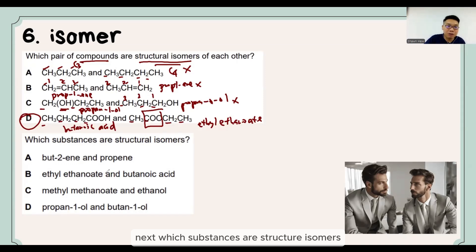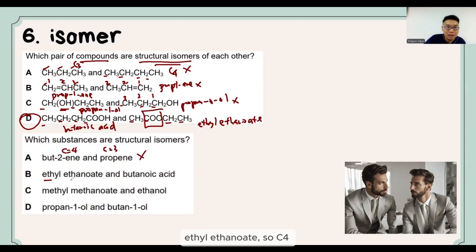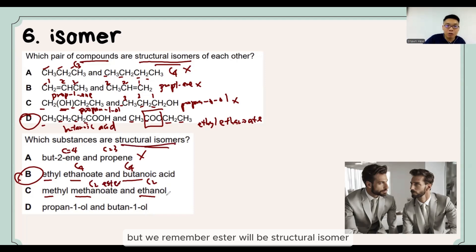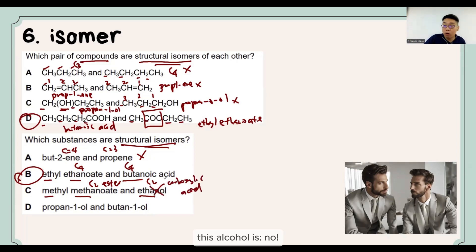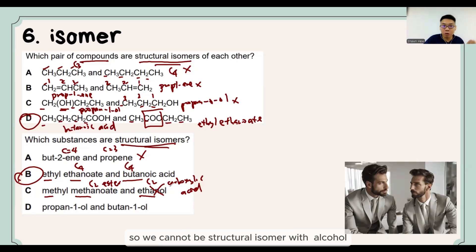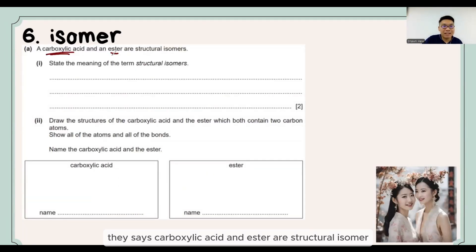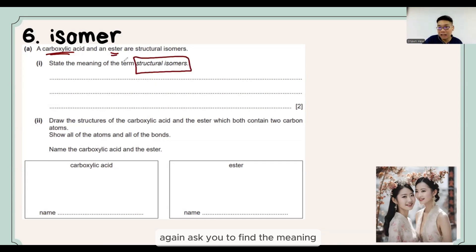Next question: which substances are structural isomers? For option A — butene vs propene — one is C4, the other is C3, so definitely not structural isomers. The question then asks about a pair involving an ester and alcohol. For option D — propan-1-ol and butan-1-ol — one is C3 and one is C4, so the answer is B.